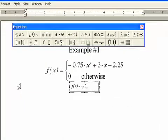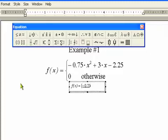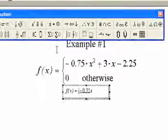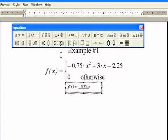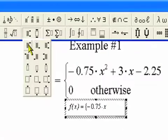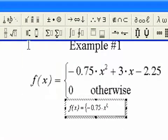We type in negative 0.75. Now for our times sign, we're going to go up to our top row, and we will find a dot. We don't want the huge dot, so we'll take the smaller size dot. Type in x. Now we need a square. To get a square, we go to the bottom on the third one here, and we have a superscript command right here. You'll notice we are in a superscript. We put square.